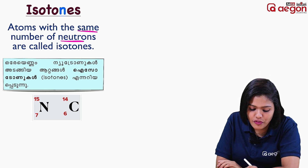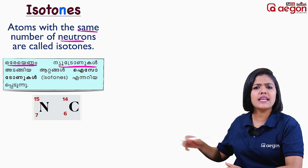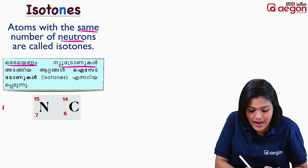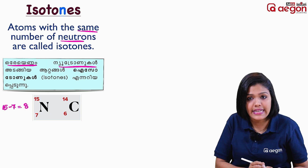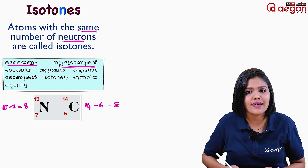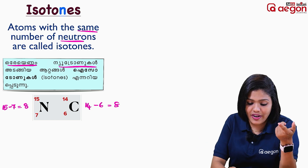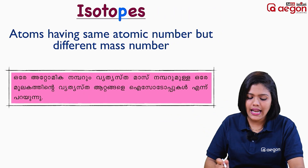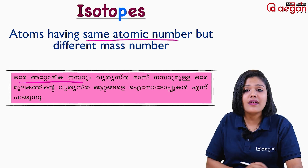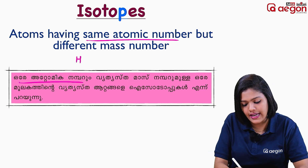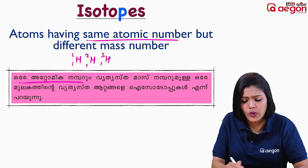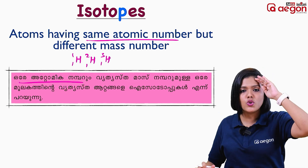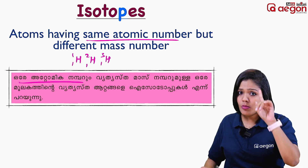Isotones are atoms with the same number of neutrons — the atomic number is different, the mass number is different, but the neutron count is the same. Neutron count equals mass number minus atomic number. Isotopes are atoms with the same atomic number — for example, H-1, H-2, and H-3 all have the same atomic number.